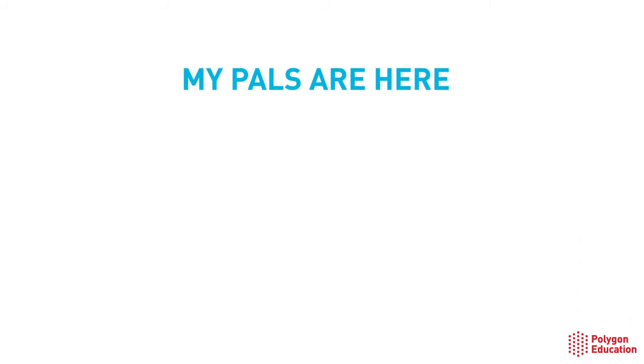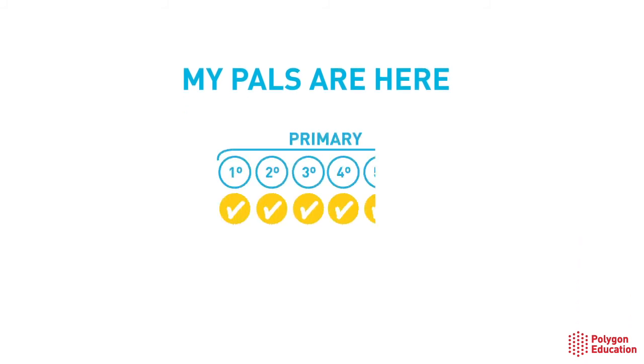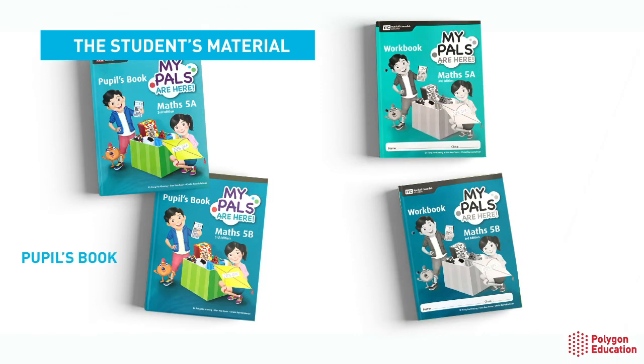My Pals Are Here is available for all years in primary education from year 1 to 6. The student's material is composed of two student's books and two workbooks.